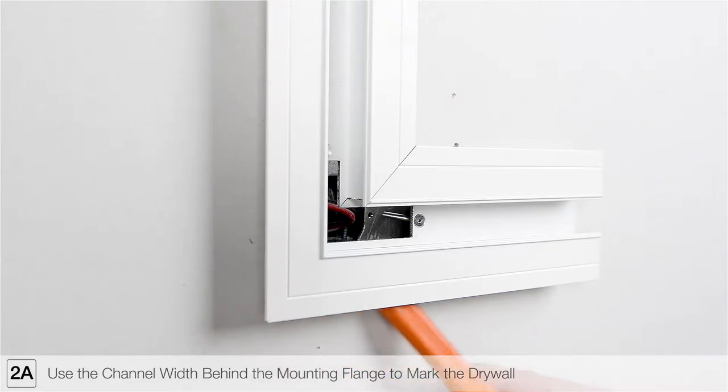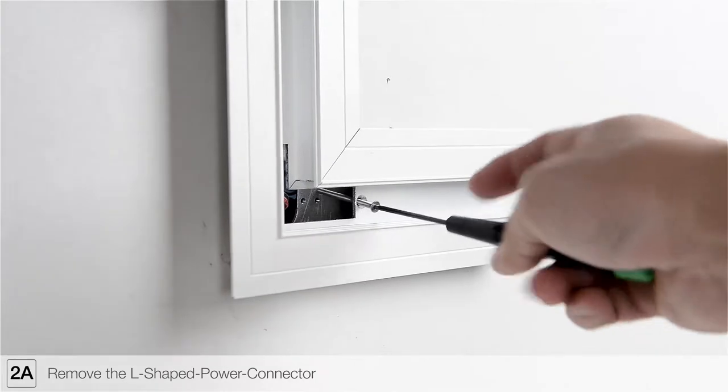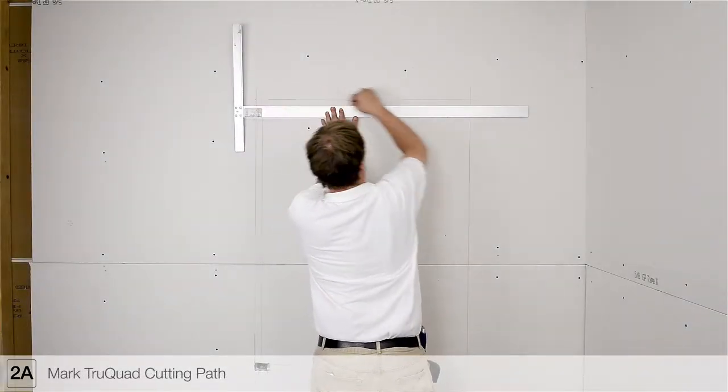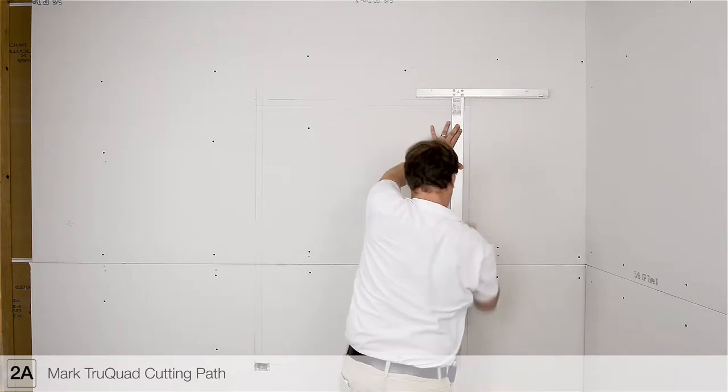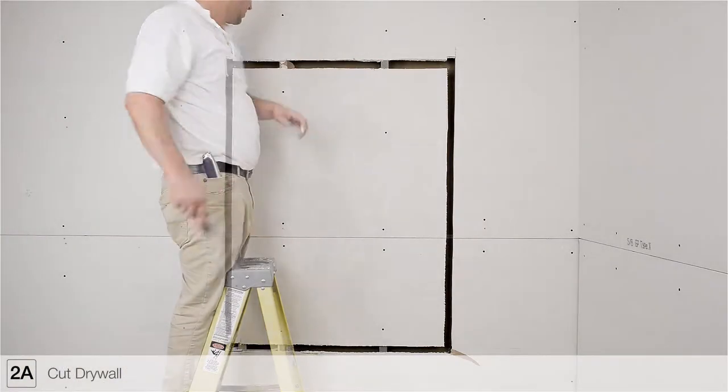Use the channel width behind the mounting flange to mark the drywall. Remove the L-shaped power connector from the drywall. Using the marked channel width, mark the picture frame cutting path on the drywall. Cut the drywall using a jab saw or other appropriate tool.